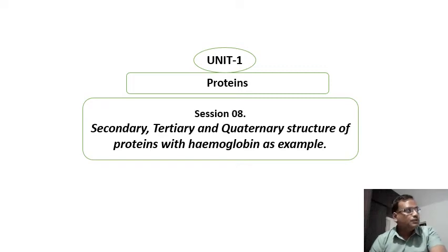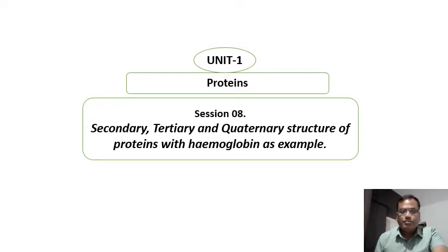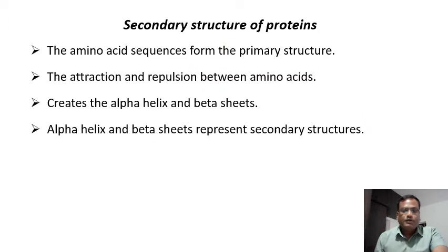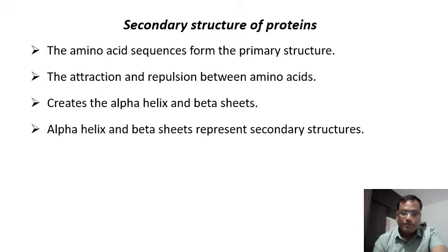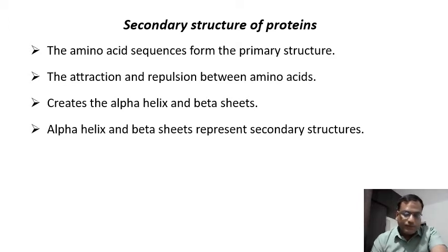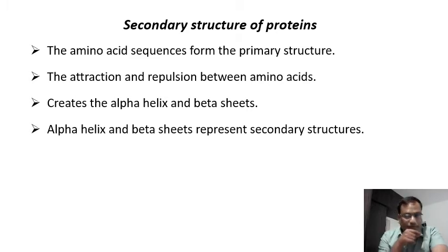In this session we are going to study the secondary, tertiary and quaternary structure of proteins by taking hemoglobin as an example. In the previous session we understood what the primary structure of protein is — it is represented by the amino acid sequence. The primary structure or amino acid sequence decides the secondary structure of the protein.